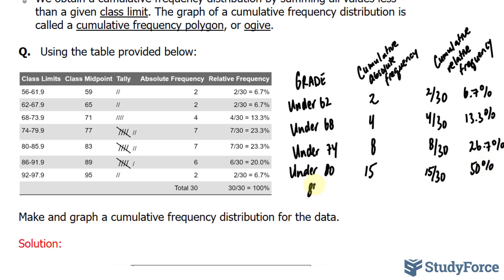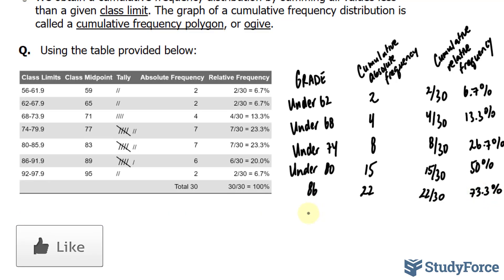Under 86. We have all of these numbers added up, which is 22. And that is 73.3%. Under 92. This will be the majority of the students. 28 over 30. That is 93.3%. And finally, how many scored less than 98?